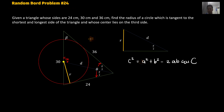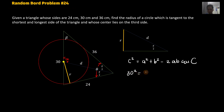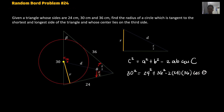In the cosine law, the small letters are the sides of the triangle and the capital letters are the angles. The angle opposite side C is angle C. In this case, the angle opposite is theta, and its opposite side is 30. So: 30² = 24² + 36² − 2(24)(36) cos θ.